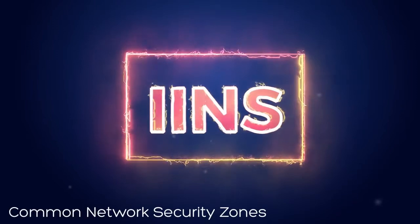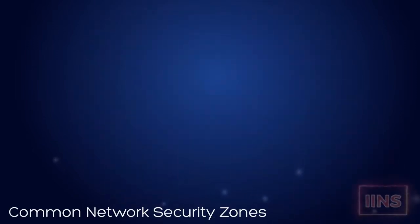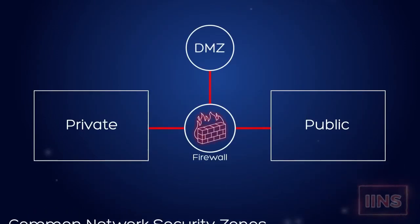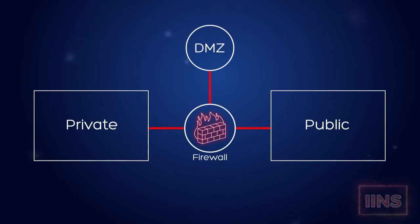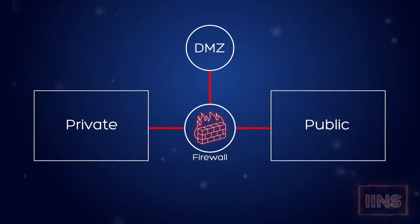The last common security principle we're going to cover is that of common network security zones. Take a look at this drawing. We have a private side of a network, a firewall, and a public side of a network, which we can assume is the part facing the internet. And in the middle of all that, we have a demilitarized zone, or DMZ for short. This type of diagram you'll see again when we cover firewalls later in the course, but let's make sure we're familiar with what each area does.